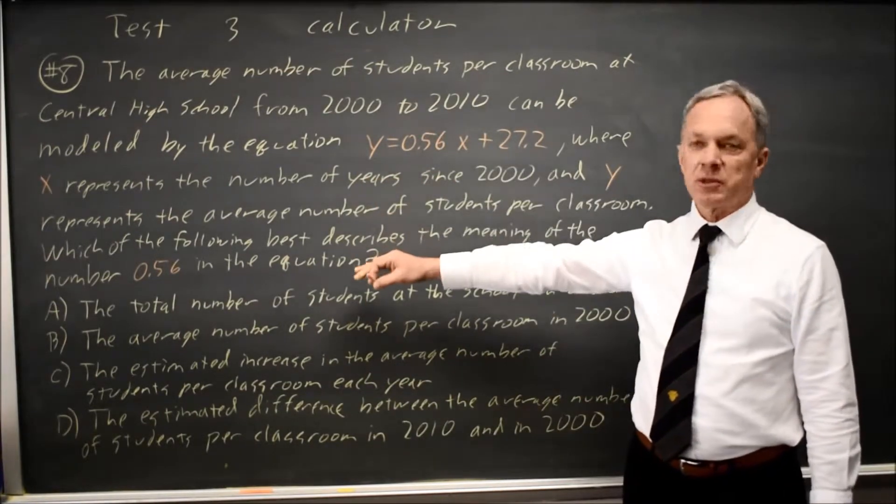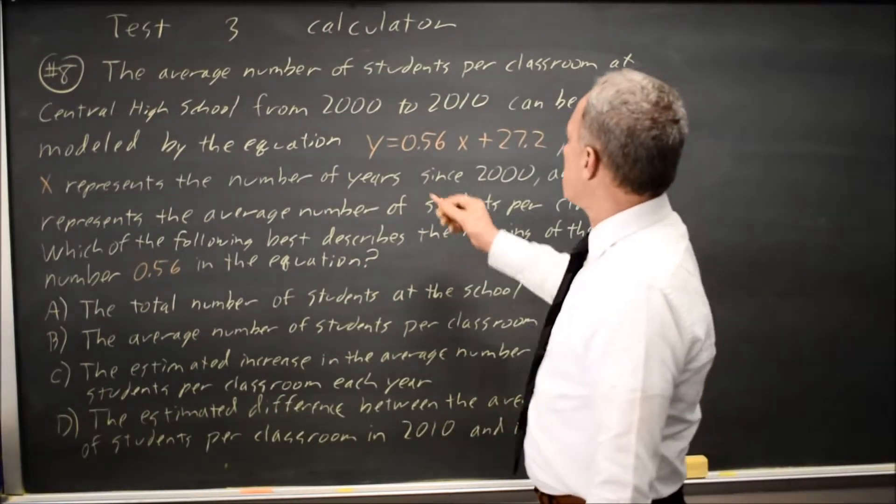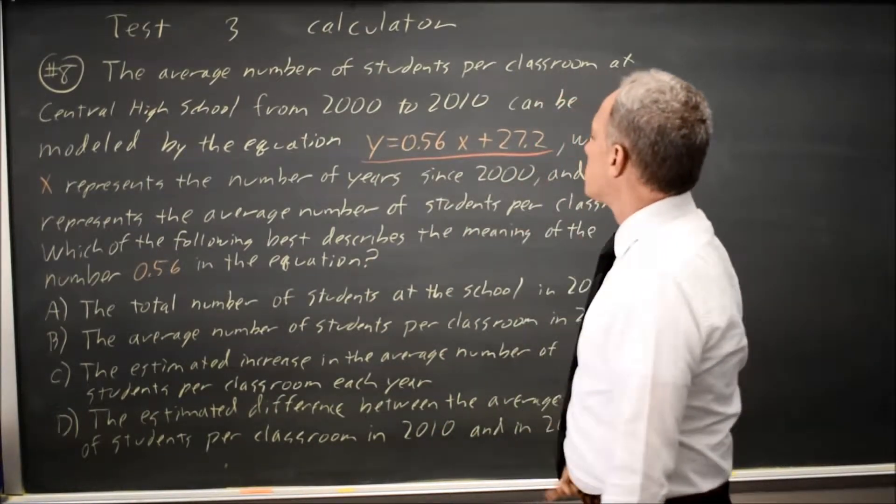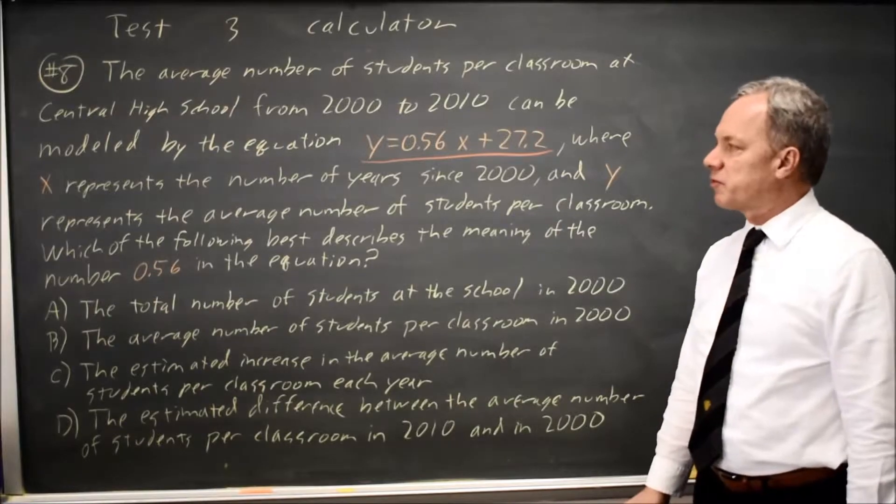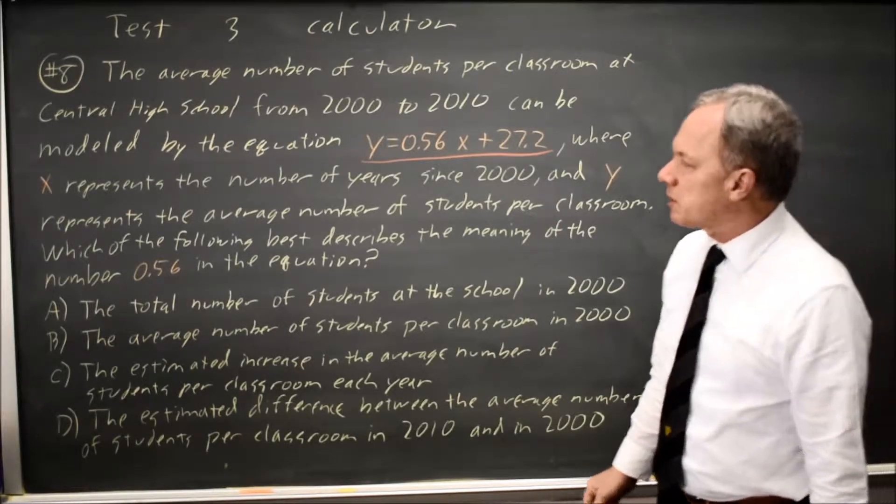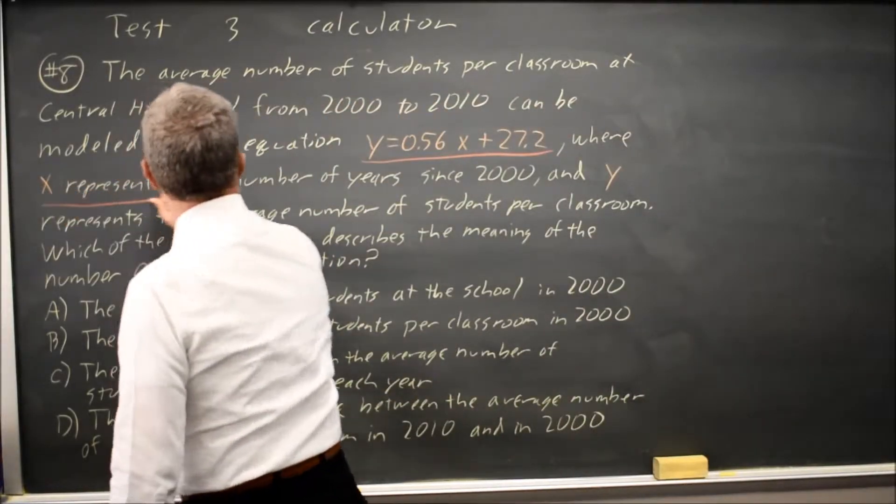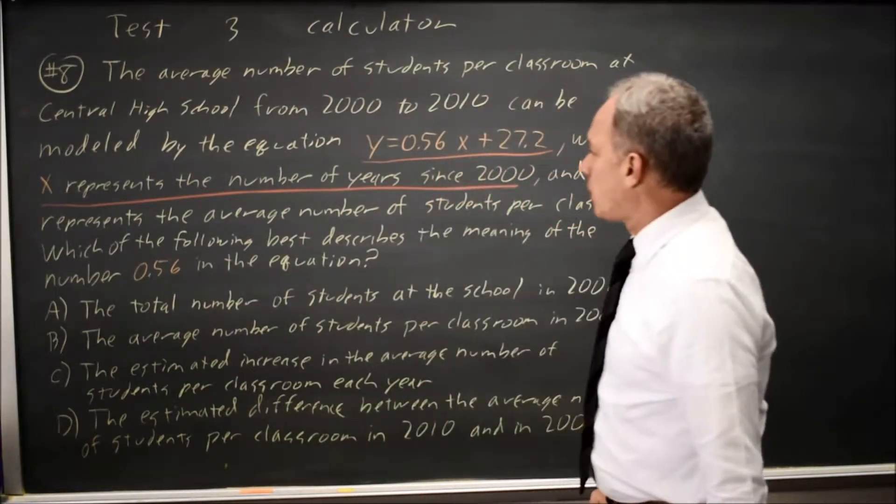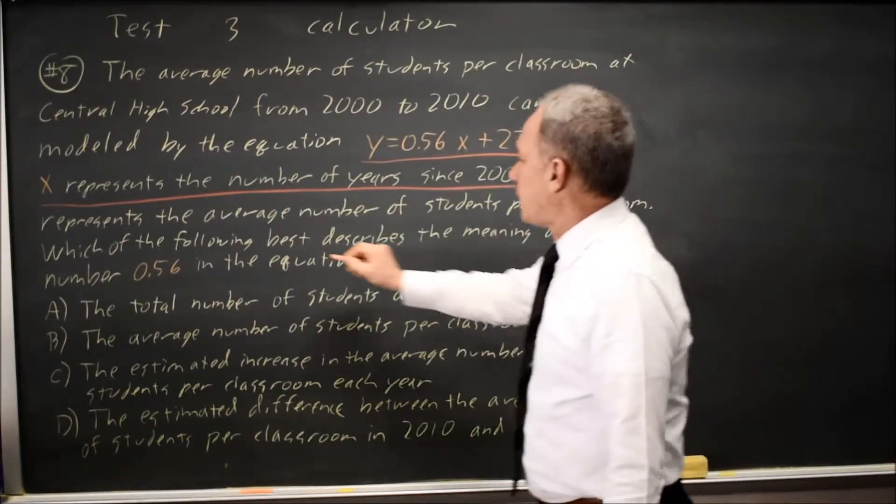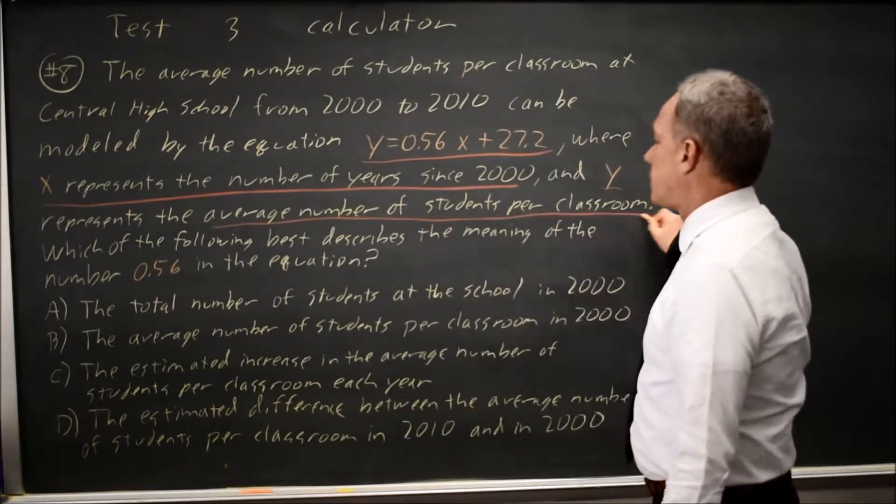College Board gives you a paragraph describing the context for a linear equation, y equals 0.56x plus 27.2, where x represents number of years since 2000, and y represents average number of students per classroom.